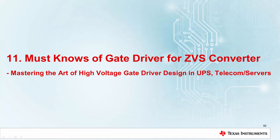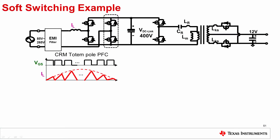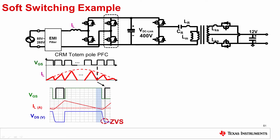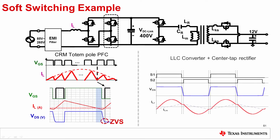Section 11 will discuss a few masterpoints of gate driver for soft switching ZVS converters. The reverse recovery discussed in the previous section is really a headache for optimizing system efficiency and reliability. To further eliminate this issue, soft switching is the way to go, like the critical mode totem pole PFC and the LLC converters — turning on the device after the VDS voltage decreases to zero.